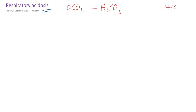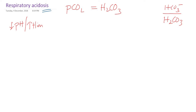So what is the buffer? The bicarbonate buffer. We are referring to the denominator of this particular buffer. Respiratory acidosis means a decrease in the pH or increase in the hydrogen ion — specifically, a fall in blood pH due to a raised partial pressure of carbon dioxide.